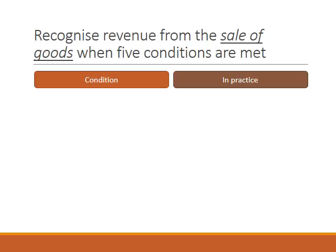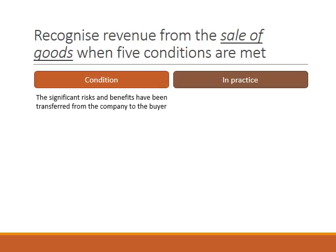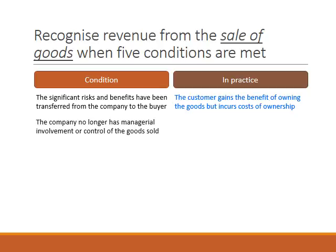Let's look at when we should recognise revenue from the sale of goods. This is when five conditions are met. The first condition is that the significant risks and benefits have been transferred from the company to the buyer — the customer now gains the benefit of owning those goods, can use them for their own enjoyment or sell them on for profit, and will also incur any costs associated with owning them, such as insuring or storing the goods. The second condition is that the company no longer has managerial involvement or control of the goods sold — the customer now has possession and can treat them as they want.